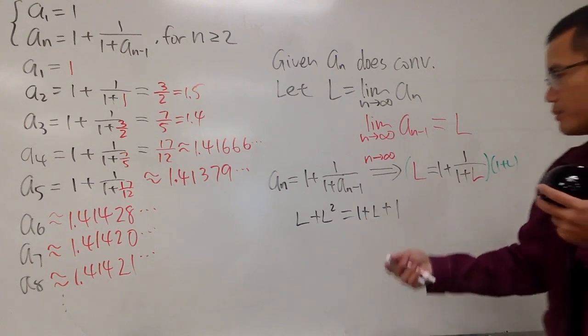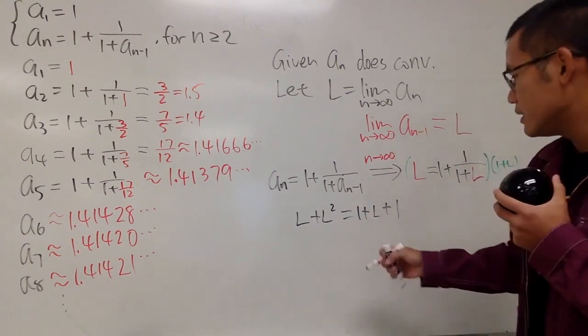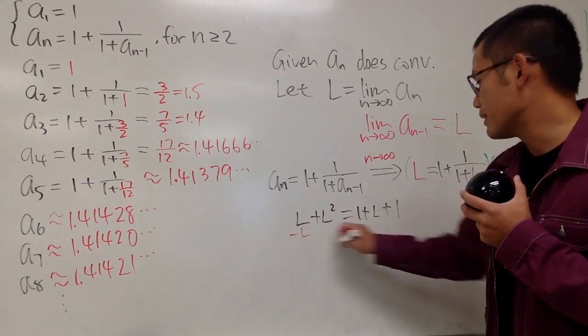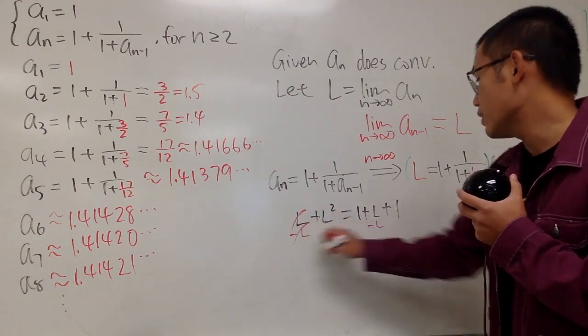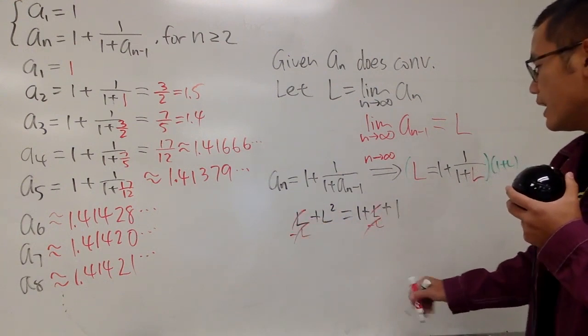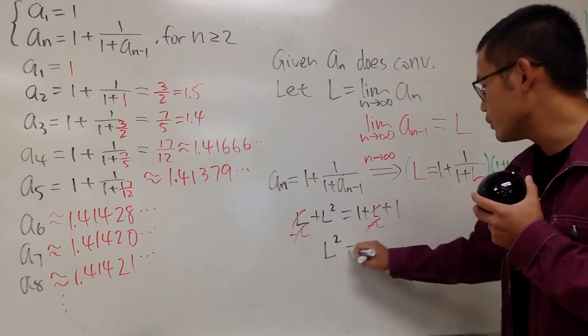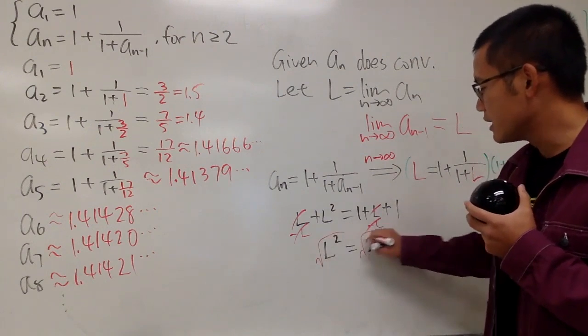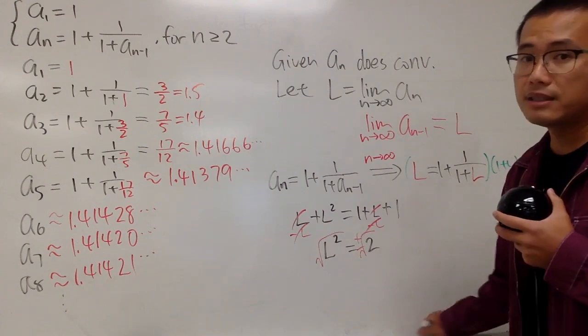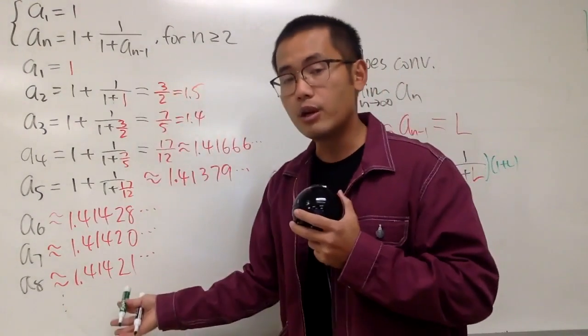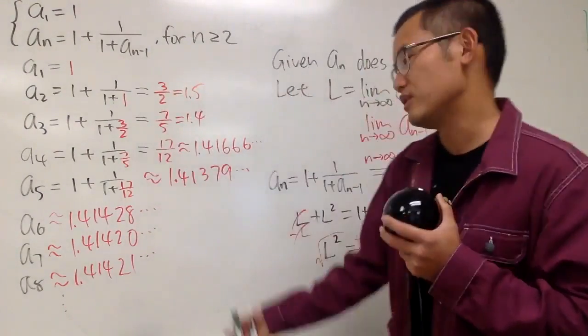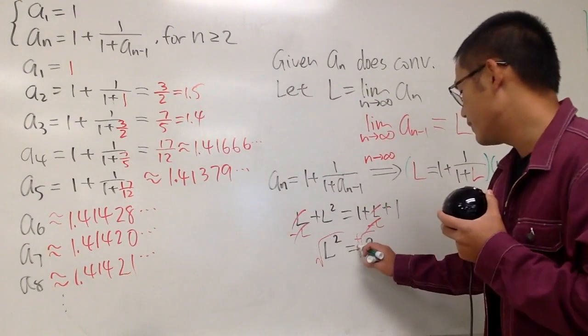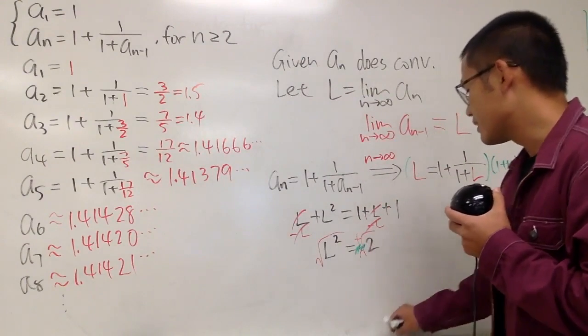So, again, I'm just multiplying things out. And now you see, we have the L on both sides, so we can minus L on both sides, and that cancels out very nicely, right? And we end up with L² is equal to 1 plus 1, which is 2, and of course, we can take the square roots on both sides. Usually, you put on plus minus, but, if you look at all these numbers right here, everybody's positive, there's no way to be negative. So, in fact, the negative doesn't matter.